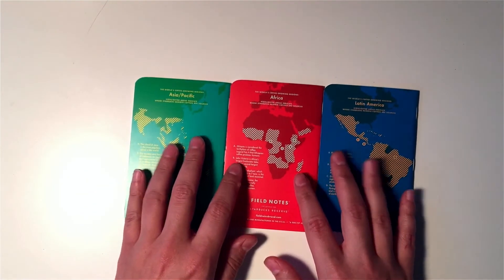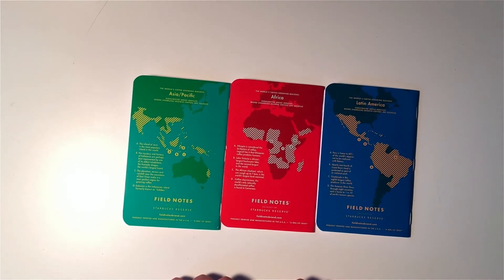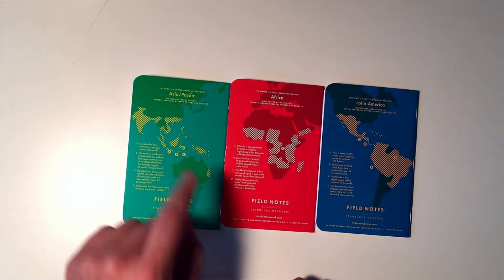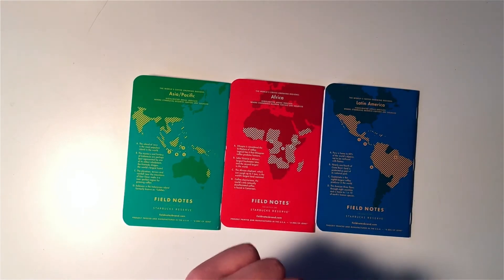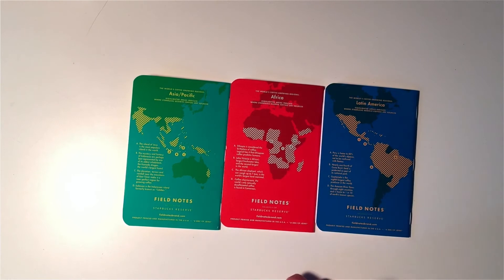We have three different countries represented, each one where a lot of coffees are grown. The green was Asia-Pacific, the red one is Africa, and the blue one is Latin America. I won't bore you by reading through the whole thing, but we'll maybe explore them in a little bit here.